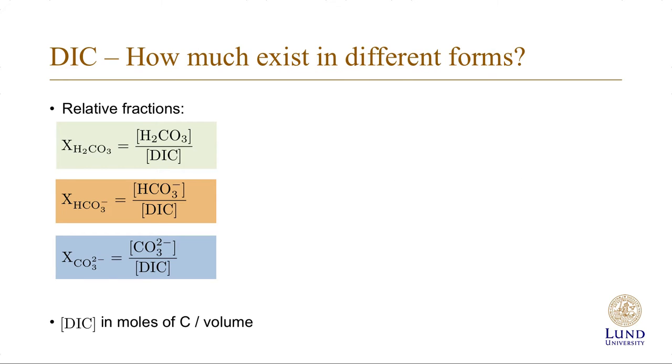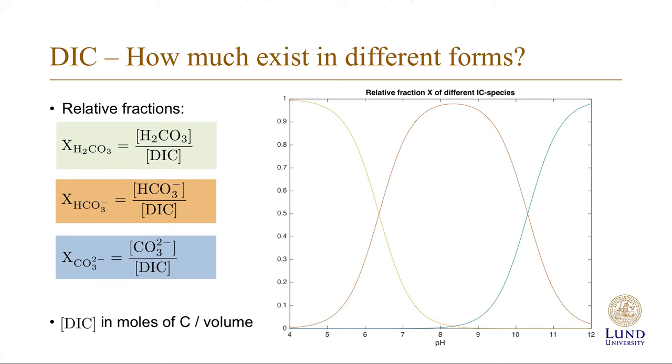One interesting aspect is the relative fractions of the various species. And in every textbook you see this diagram illustrating the fraction of DIC that is present in a specific form. So at low pH values, most of the DIC is in the form of carbonic acid.